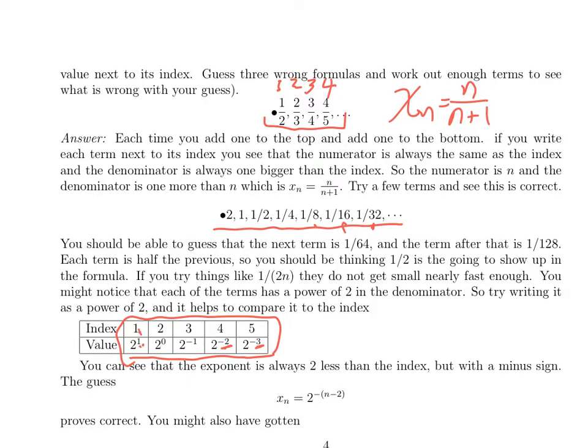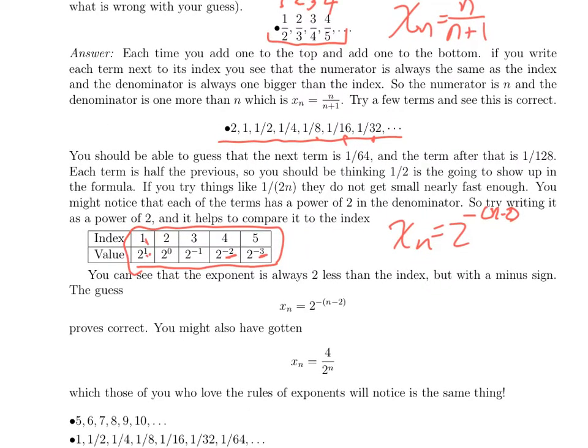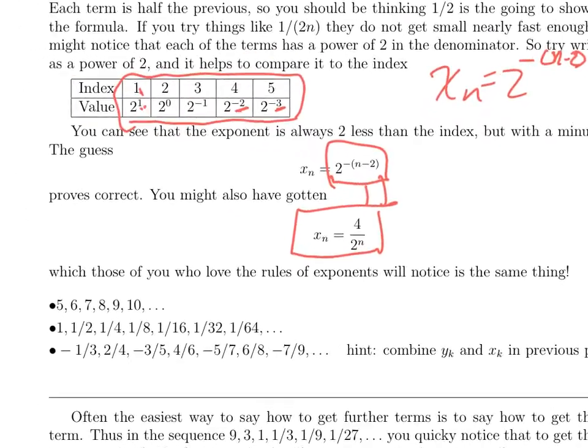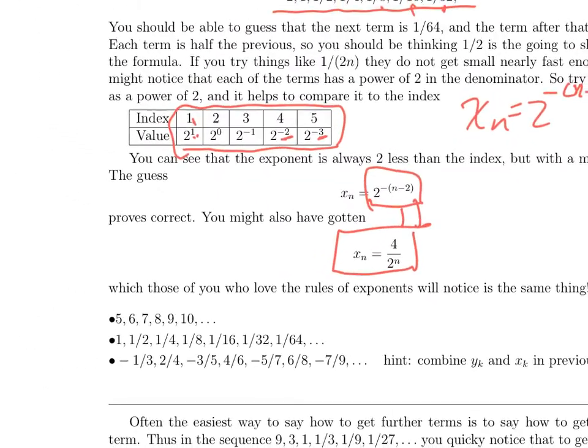That suggests that x_n is 2 to negative, negative what? Two less than the index. That's n minus 2. If you try that, it works. Your thinking might have been different, and it might have gotten you a formula that looks different. Like perhaps you wrote down 4 over 2 to the n, which works just as well. That's perfectly good. Of course, if you play around with rules of exponents for just a moment, you'll see that these are equal. There are lots of other ways that you could write it, and different ways of thinking will get you different ways of writing it. Those are all good.